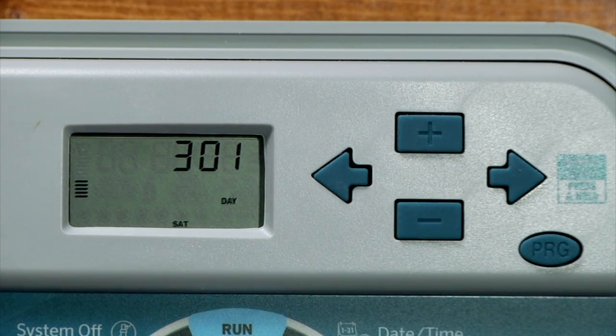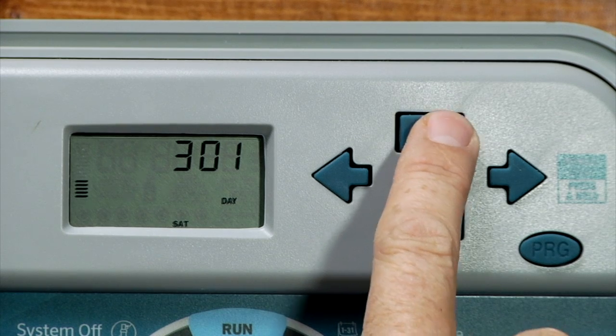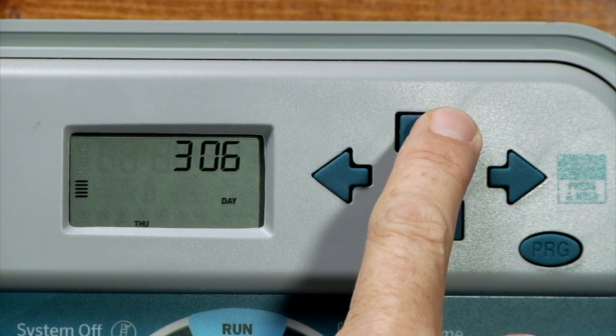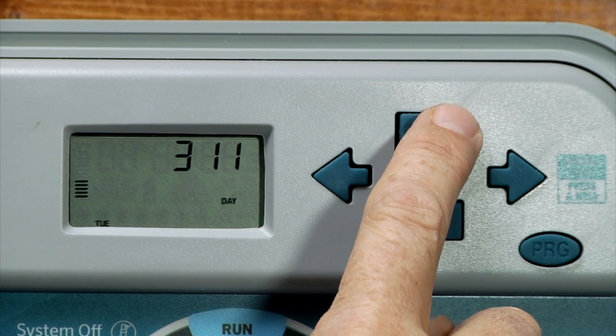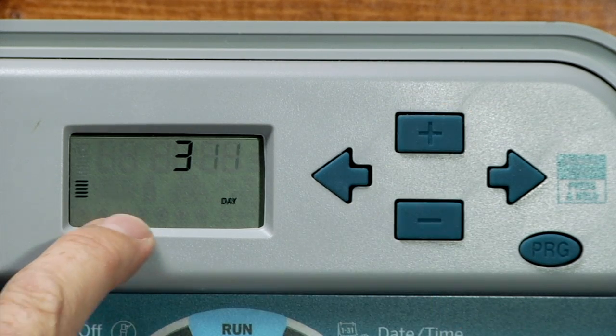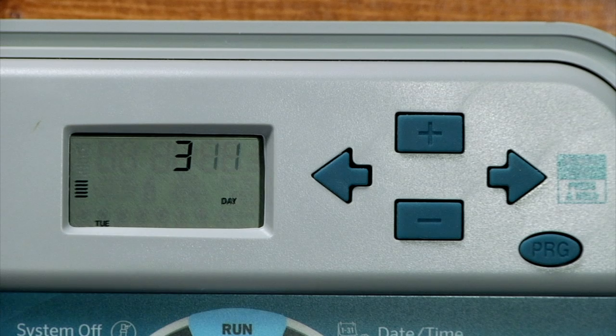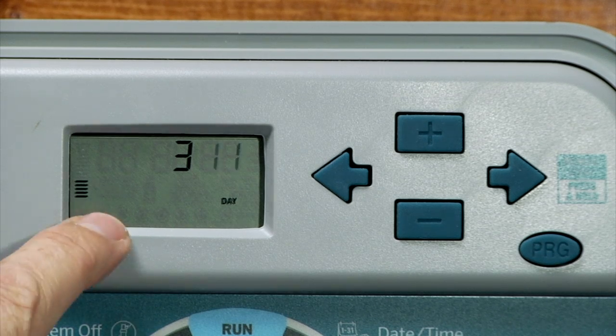We'll use the right arrow to go to the day function, and we'll go up to the 11th, which happens to be today. The day of the week across the bottom will automatically advance as the day does during the month, so we're showing Tuesday, which is correct.